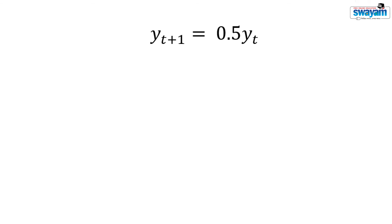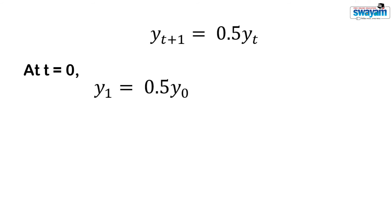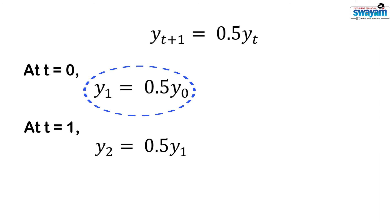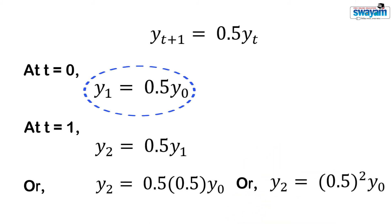Consider this first order difference equation. If t is equal to 0 we may write y1 equal to 0.5 y0. Let y0 be the initial value. When t is equal to 1, y2 is equal to 0.5 y1. Since y1 is equal to 0.5 y0, we replace this value and get y2 equal to 0.5 squared times y0. In the same way we can find the values of y in successive time periods. In general for any time t we may have this equation.